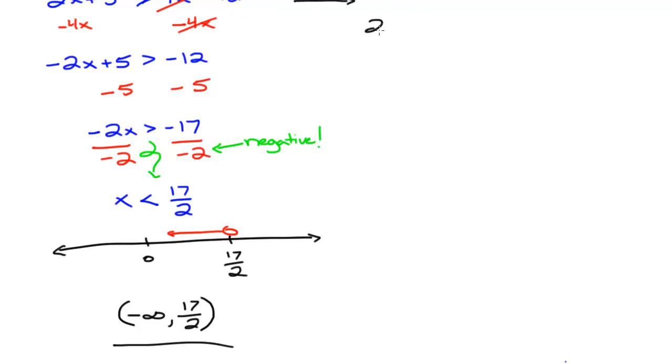If we write, so 2x plus 5 is greater than 4x minus 12. So again, this is after I've distributed that first step. I could subtract 2x from each side. So I'm going to subtract 2x. Again, this still consolidates the variable.